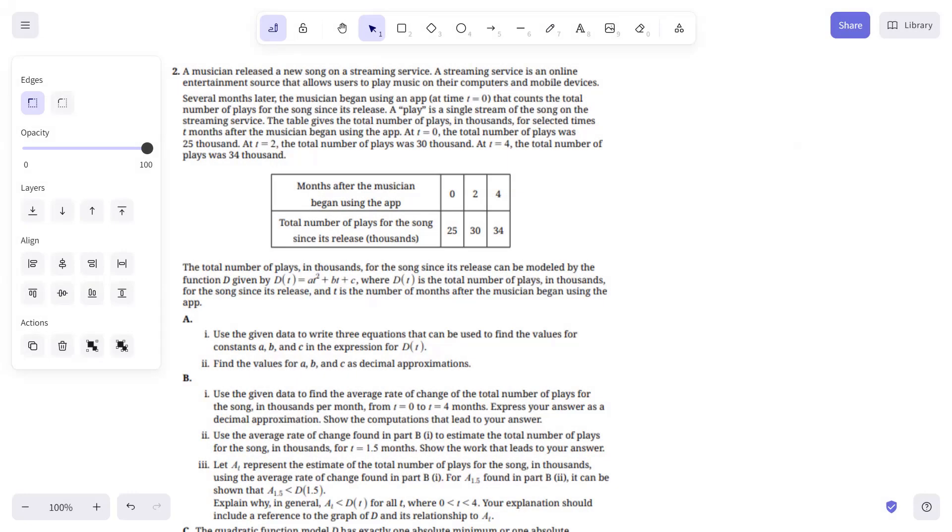So number two is a pretty big context here. We have a table of values for the number of months after the musician began using the app, and the corresponding total number of plays for the song since it's released, and the function D that can model this situation. So part A1, use the given data to write three equations that can be used to find the values for constants A, B, and C.